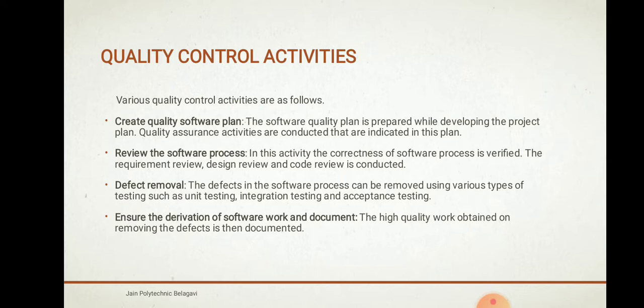The second activity is to review the software process. The correctness of the software process will be verified — whether the software process is going step-by-step correctly. Requirement reviews, design reviews, and code reviews will be conducted. The third activity is defect removal, where defects in the software can be removed using various types of testing.